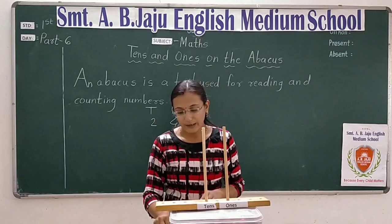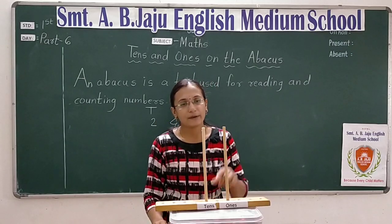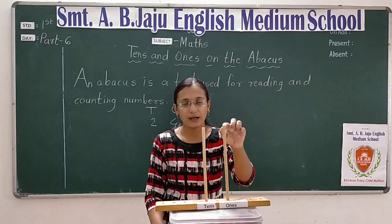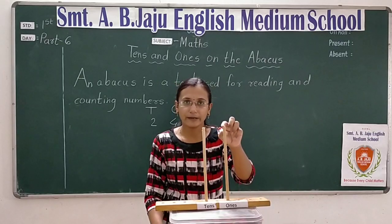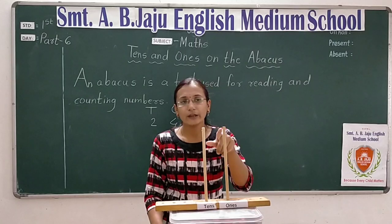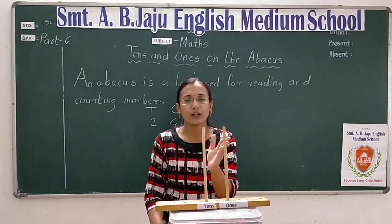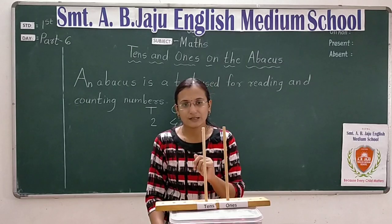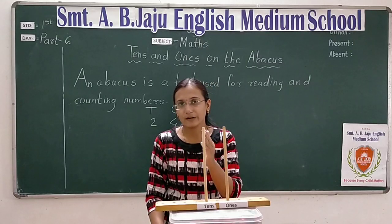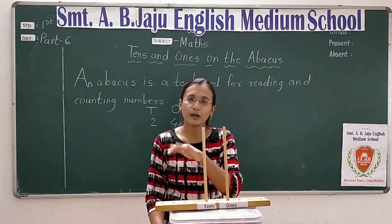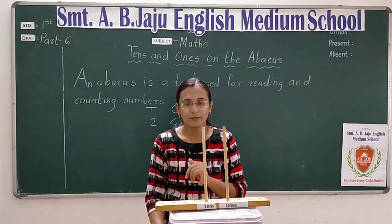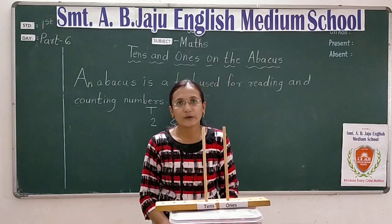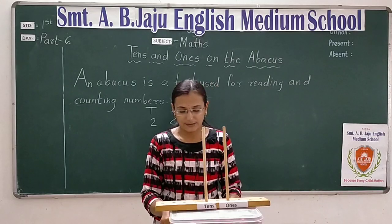Okay? Students, abko hum ek dhyan mein rakhna hain. Abacus ki one rod mein kitne beads hote hain? Nine beads. Agar aap yahan pe ten digits karenge toh woh nahi hota hai. Nine beads ek rod mein hoti hain. Aur agar one add karenge toh woh tens space pe chala jaata hai. Okay? Now we will see how to represent two digit numbers on abacus.